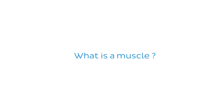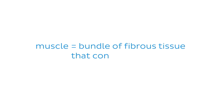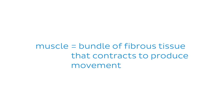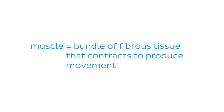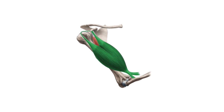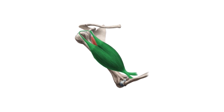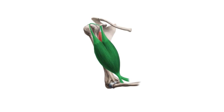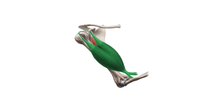The first term we're interested in defining is: what is a muscle? A muscle is a bundle of fibrous tissue that contracts to produce movement. You can feel your muscle when you tense your bicep, for example, which is highlighted in green in this image, and you can see the muscle moving up and down.